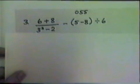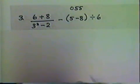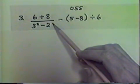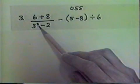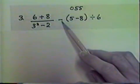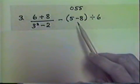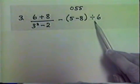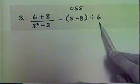Our next example is even longer. Example 3 has 6 plus 8 above a fraction bar. Below the fraction bar, 3 squared subtract 2. Then subtract, in parentheses, 5 subtract 8. After the parentheses, divide it by 6.